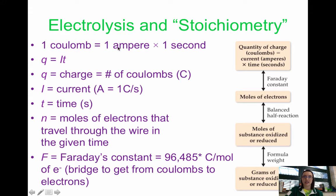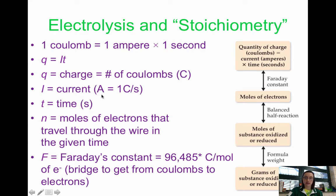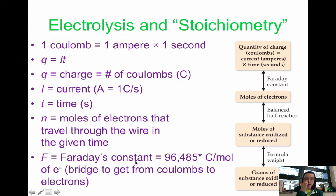You can rearrange Q = IT to get amps in terms of coulombs per second. Q is your charge in coulombs; current I is measured in amps, where one amp equals one coulomb per second — so 10 amps means 10 coulombs per second. T is your time in seconds. N is your moles of electrons transferring through the wire, and F is Faraday's constant: 96,485 coulombs per mole of electrons. This is on your equation sheet, so you just need to know how to use it.